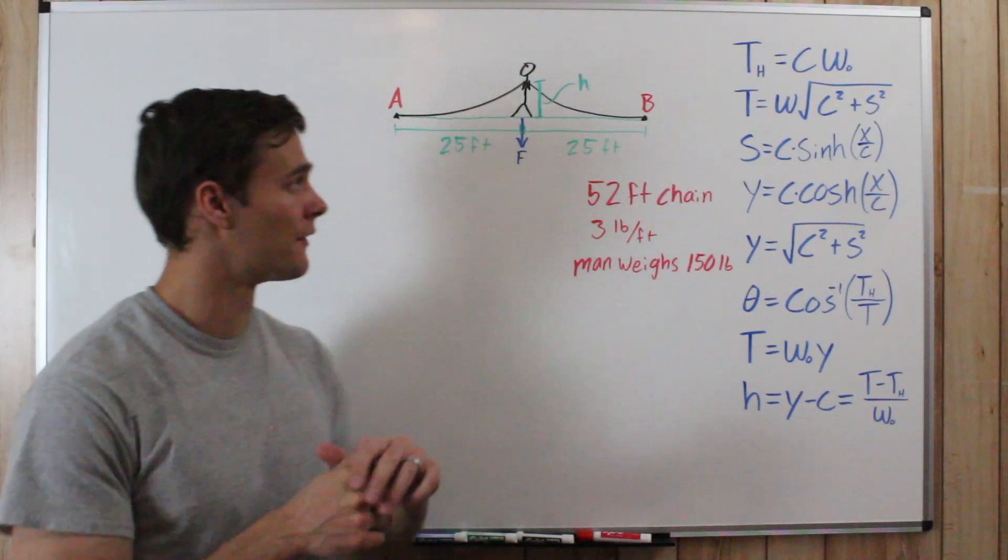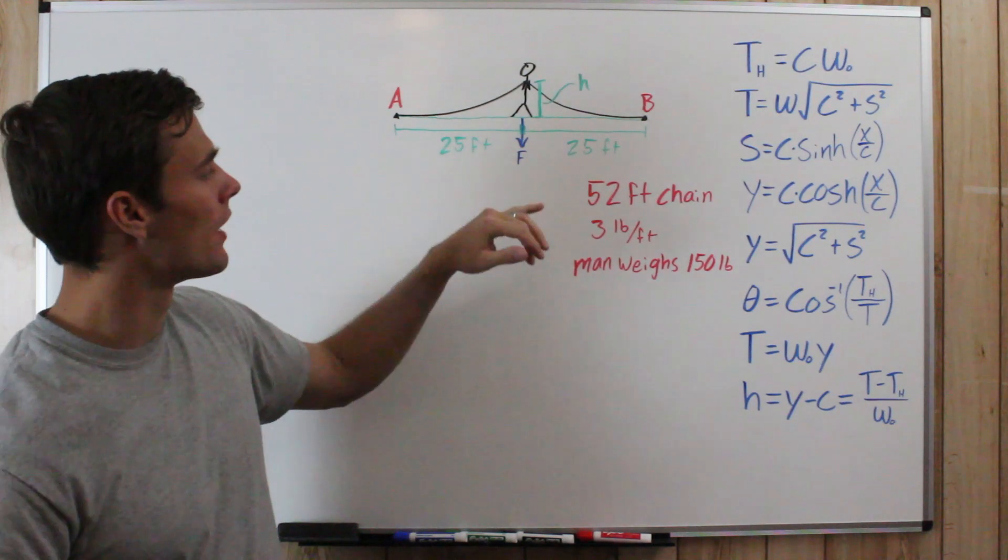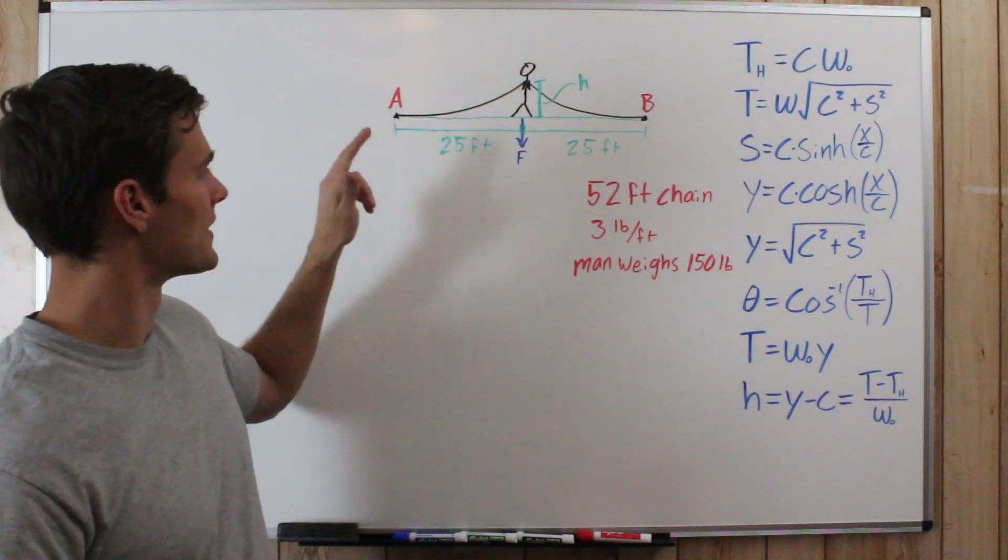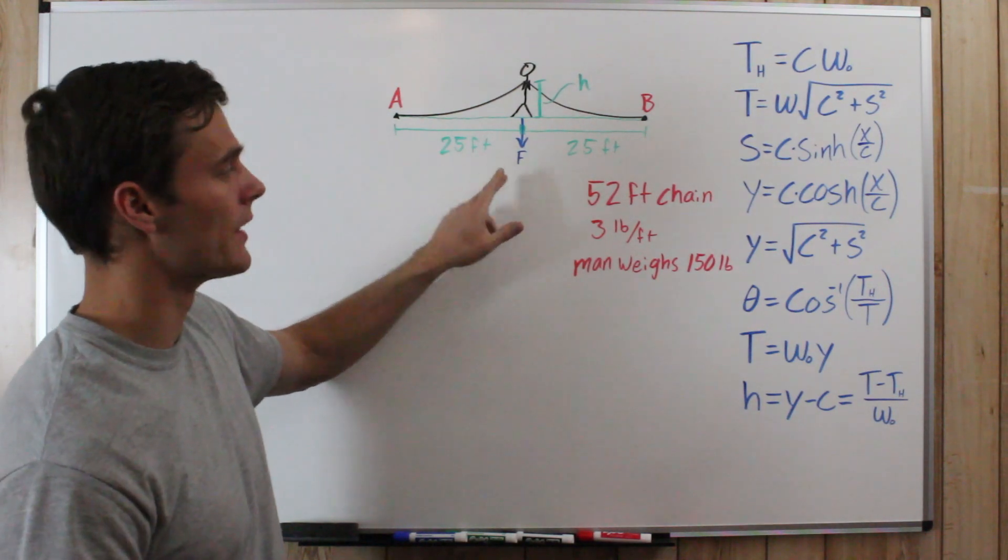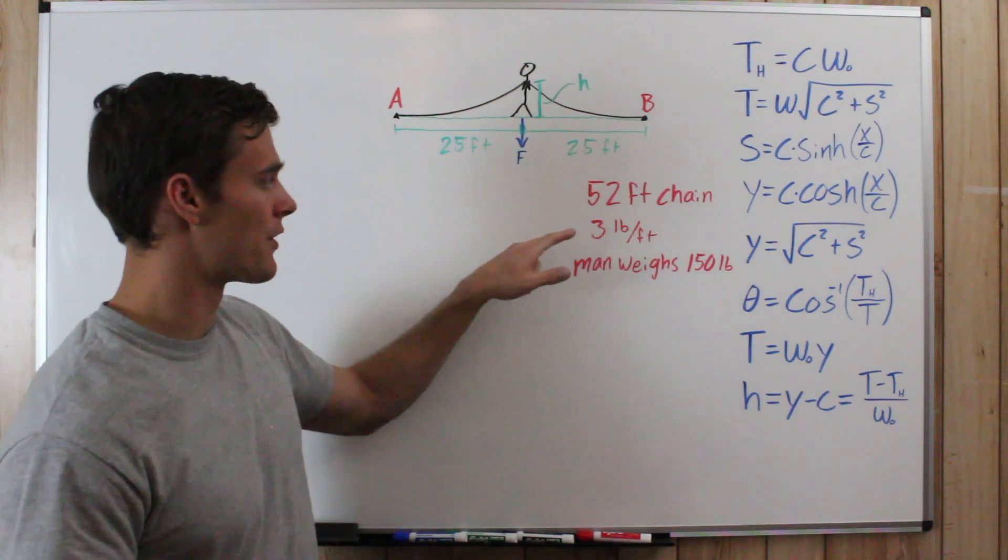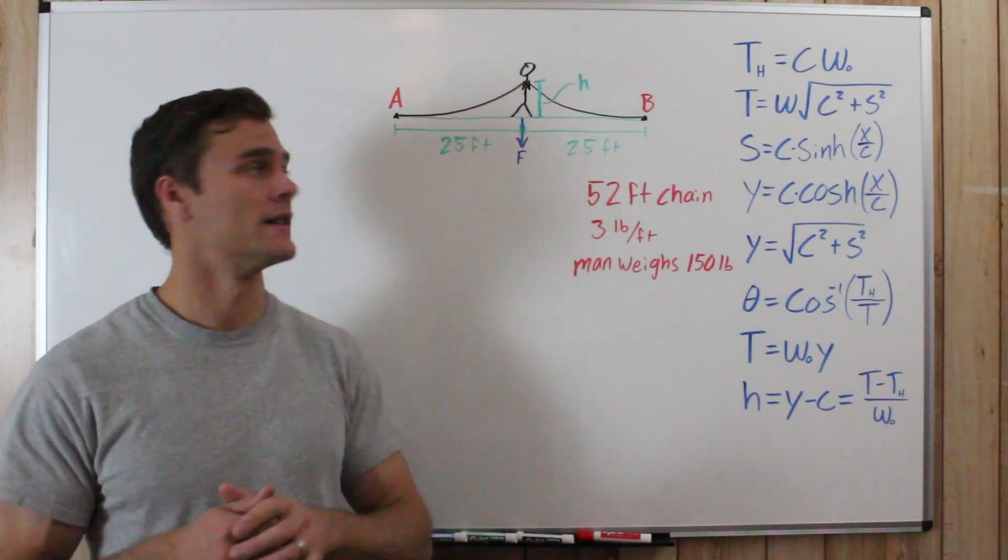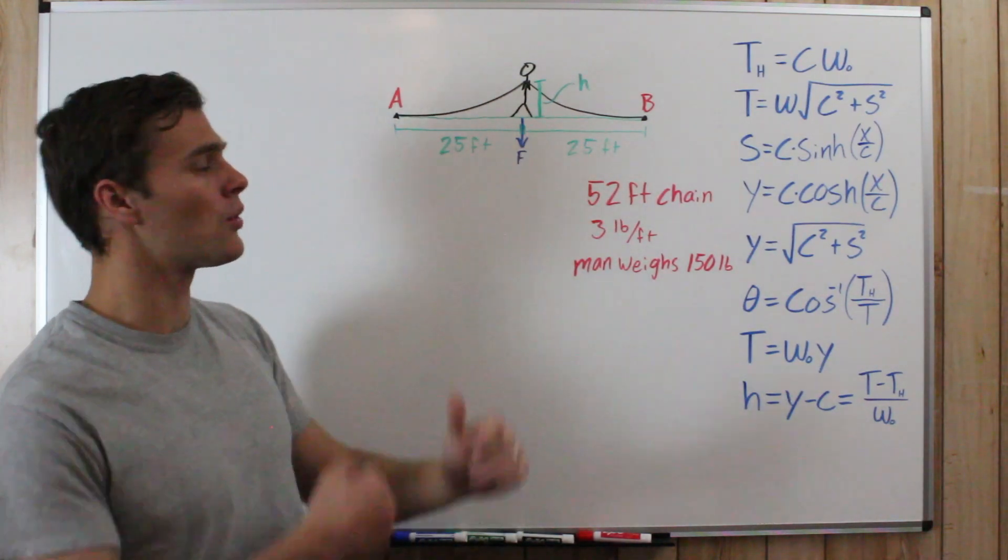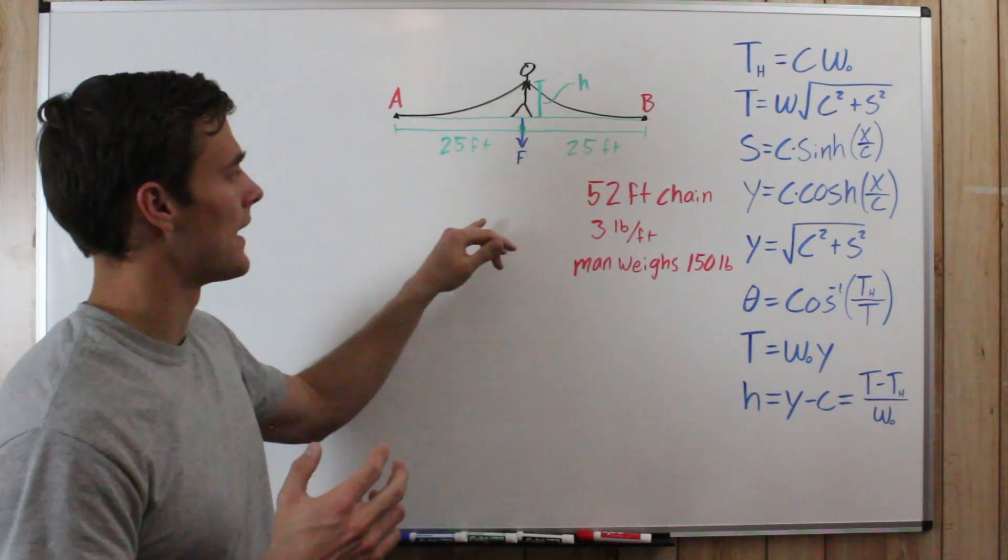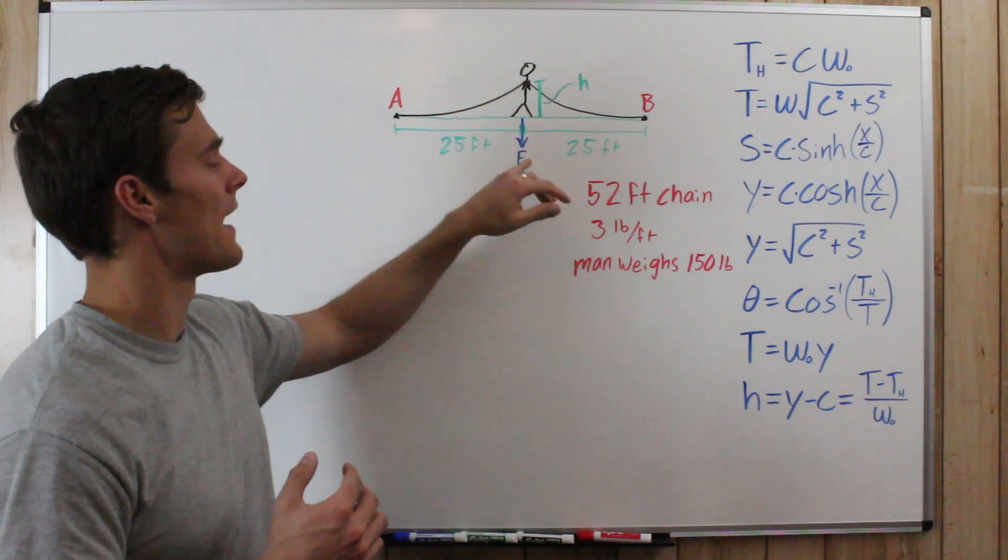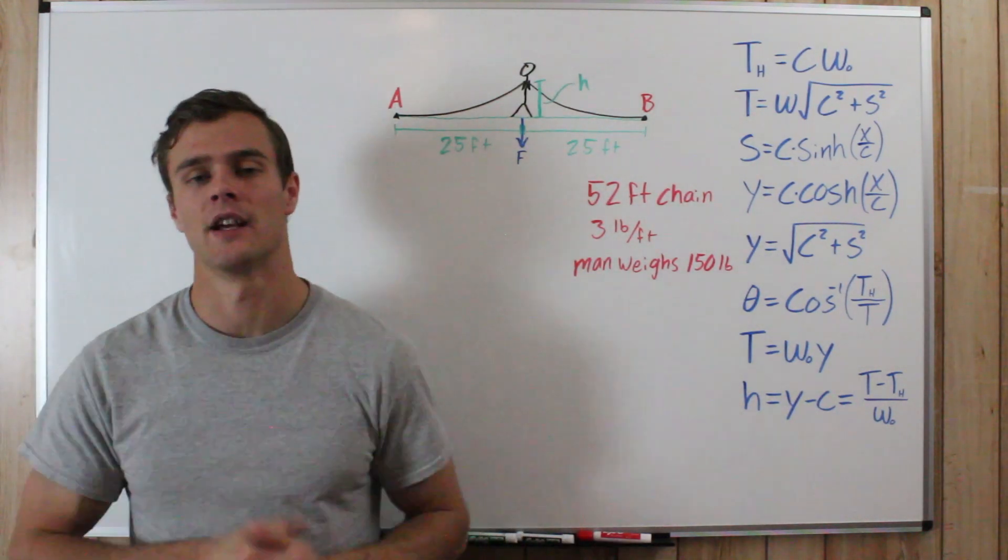So what we have here is a man holding up a chain that is 52 feet long, connected by supports that are 50 feet apart, and the man is standing halfway in between them. The chain weighs three pounds per foot and the man weighs 150 pounds. What we need to find is the height that he has to hold up the chain to keep all the chain off the ground and the force at that point that he exerts on the ground holding up that chain.